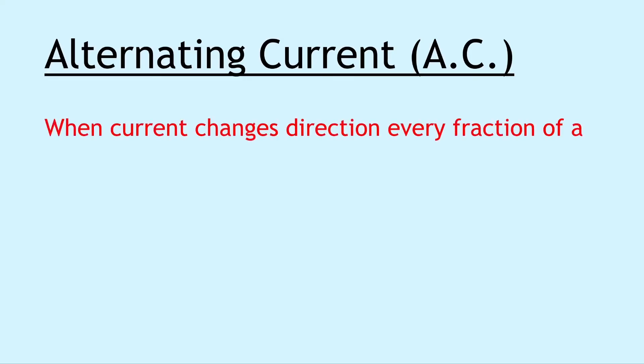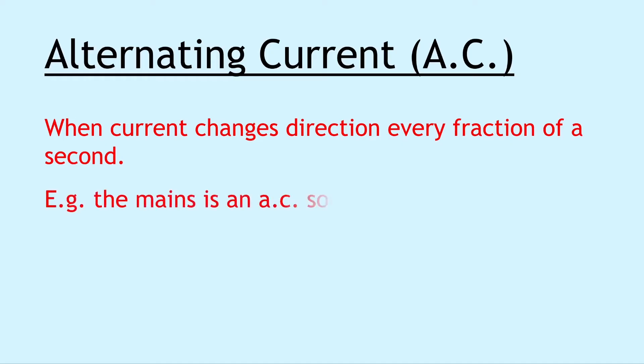Next we have alternating current, also known as AC, and this is when current changes direction every fraction of a second. So the current goes back and forth. For example, the mains is an AC source.